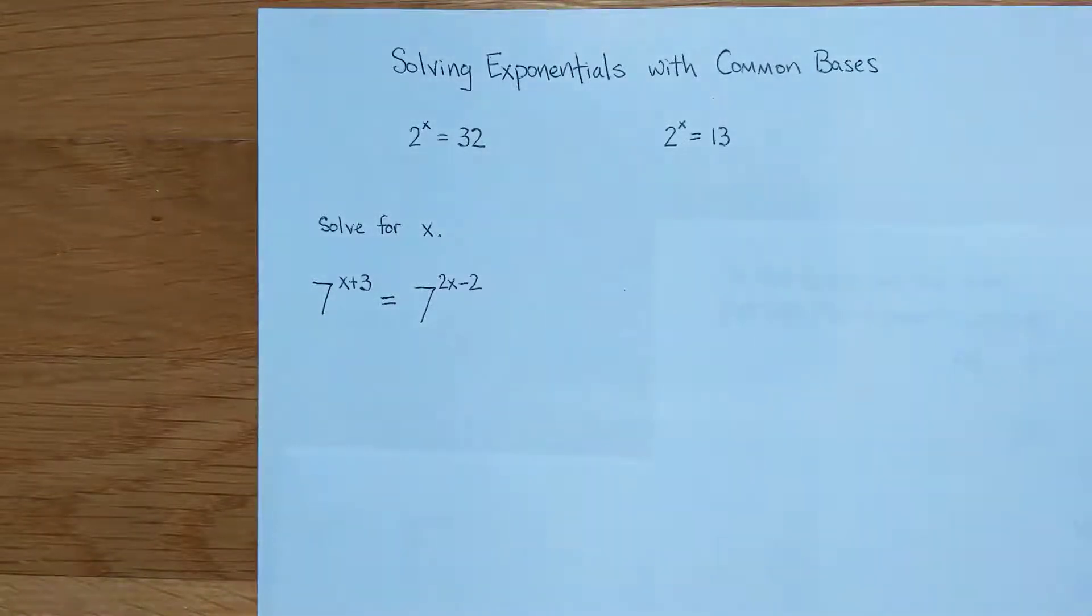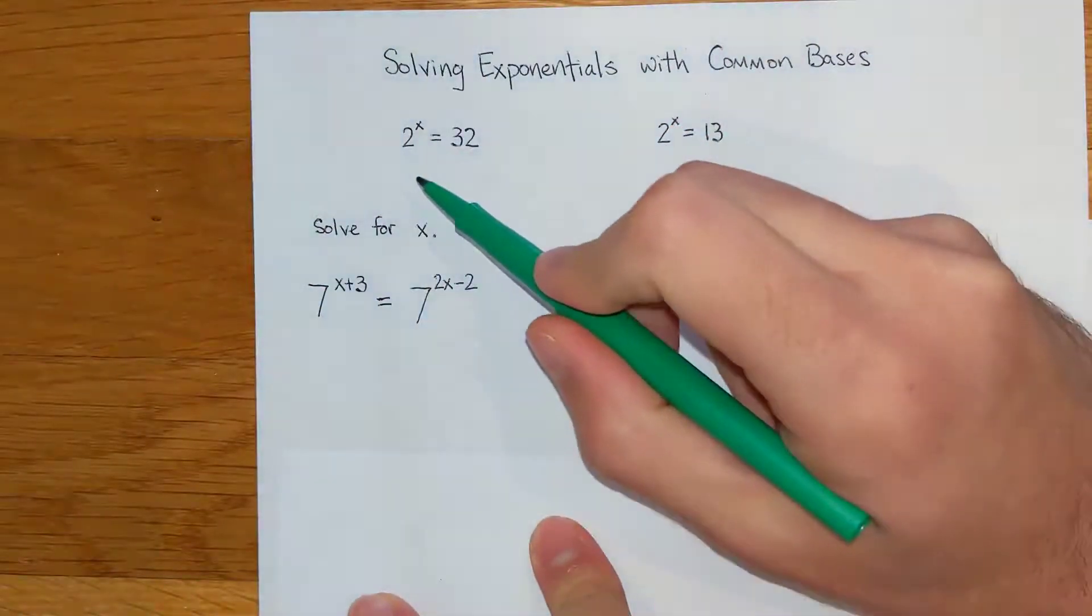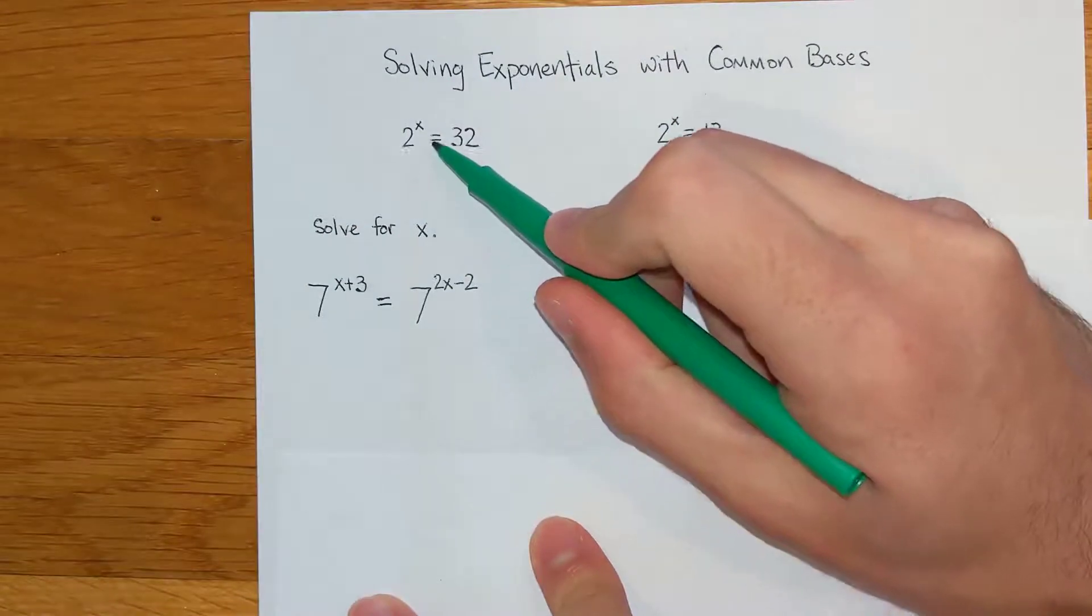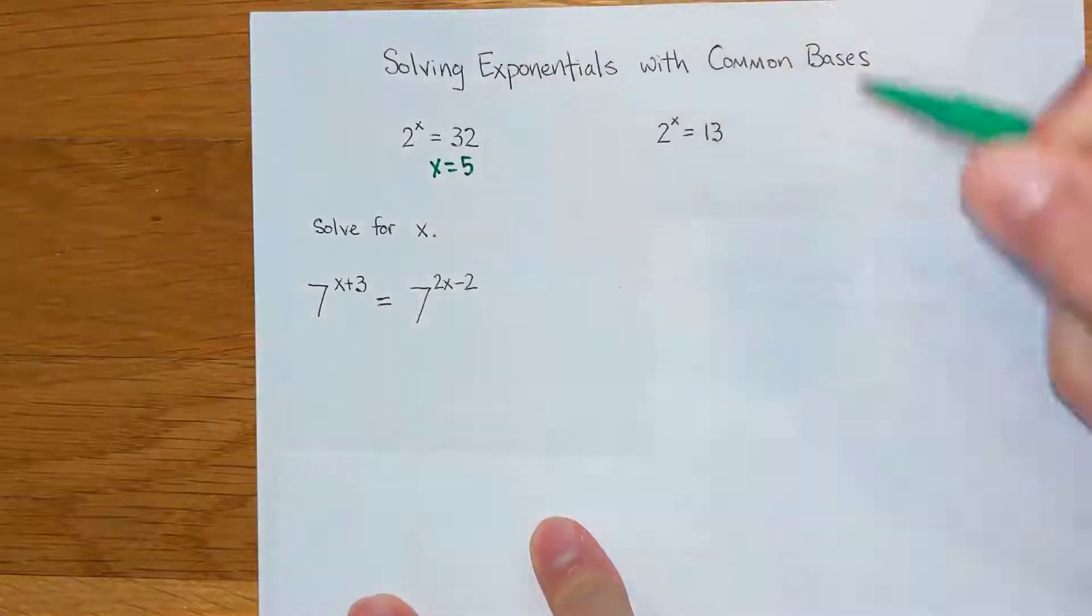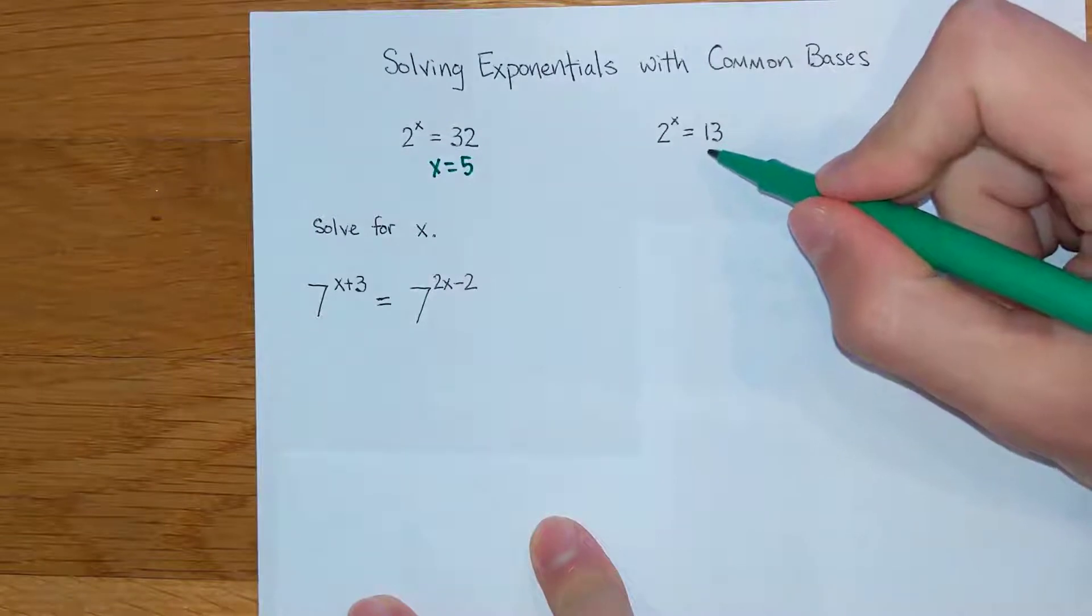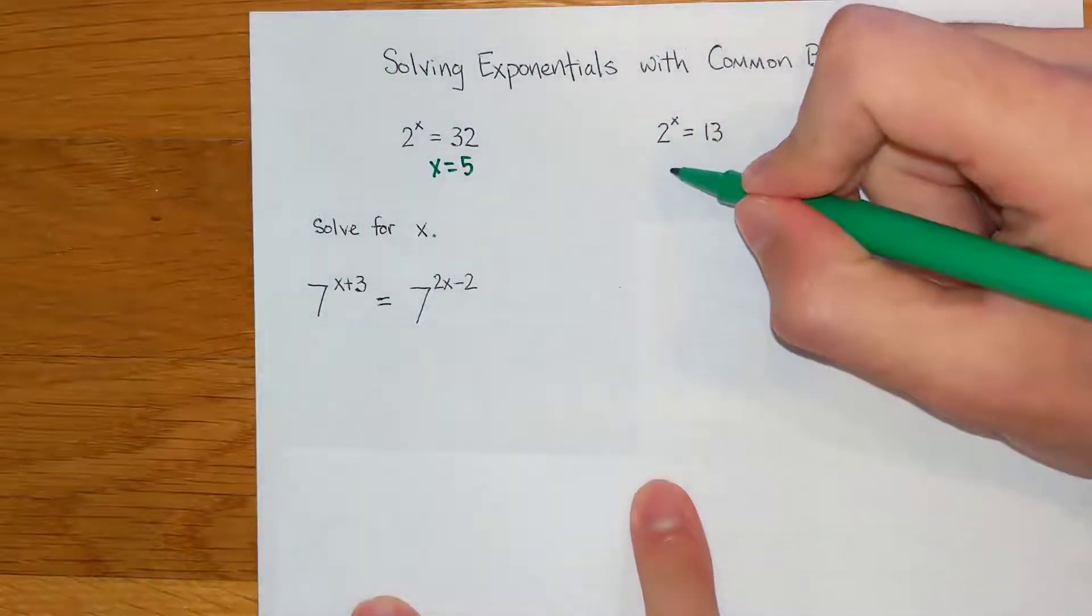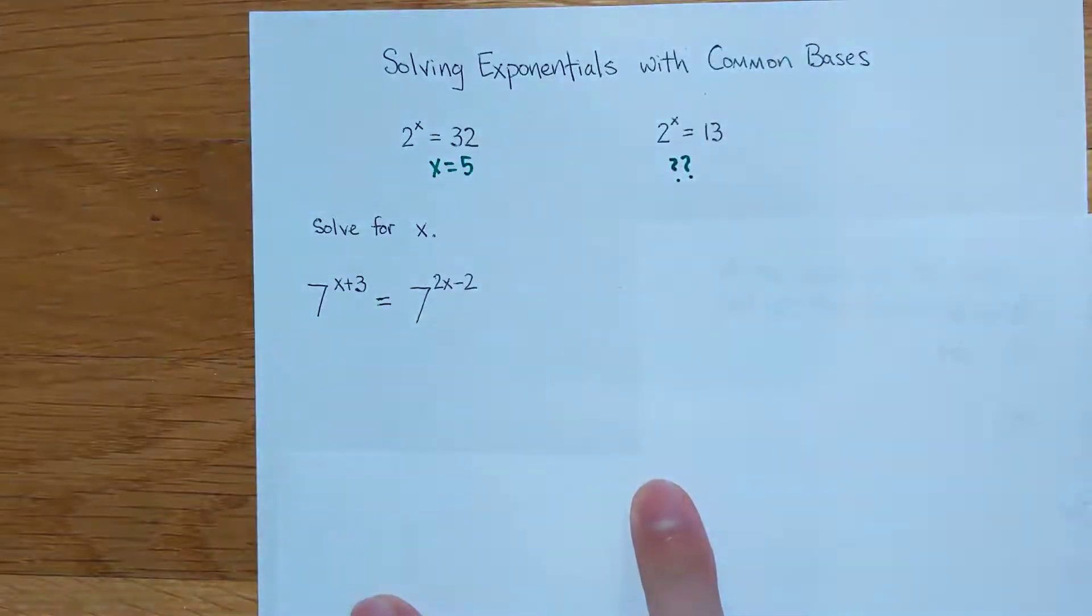Today we're going to learn how to solve exponential equations. We've seen them at least a little bit in problems like this, where you guess and check and eventually come up with the answer x equals 5 just by trying different exponents. When you get to a problem like this though, 2 to the x equals 13, this is a problem we would not be able to get an exact answer for. We're working towards a way to solve exponentials that doesn't mean just guessing and checking.